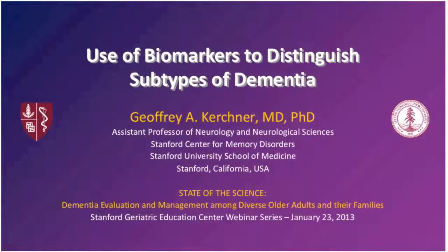What I wanted to share with you today was how we are currently using biomarkers to tell the difference between Alzheimer's disease versus other types of dementia. You heard last week from Dr. Michael Gracious, who spoke about some of the new diagnostic criteria for Alzheimer's disease and other neurodegenerative diseases. He already alluded to the fact that biomarkers are a very important part of these new criteria.